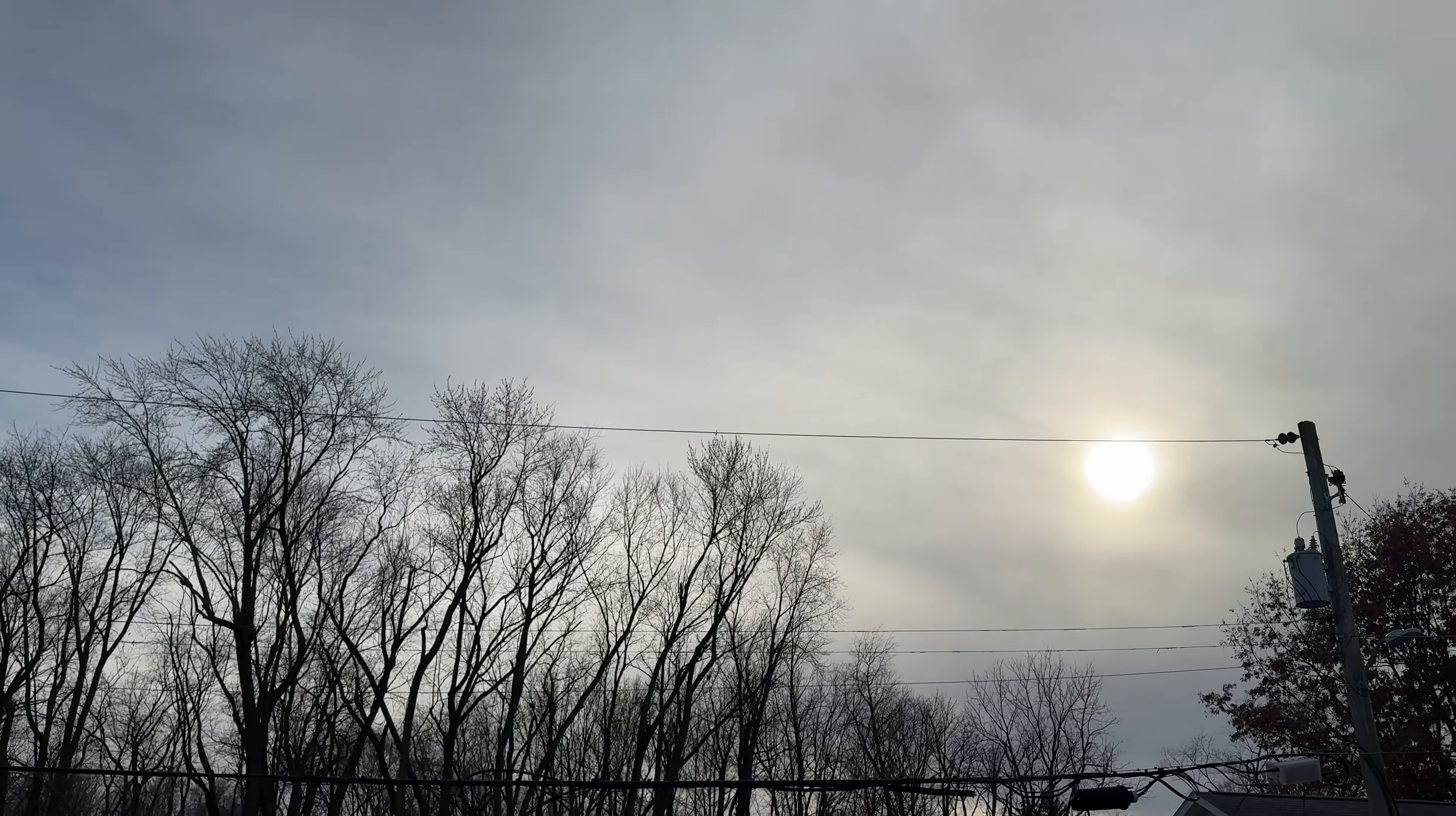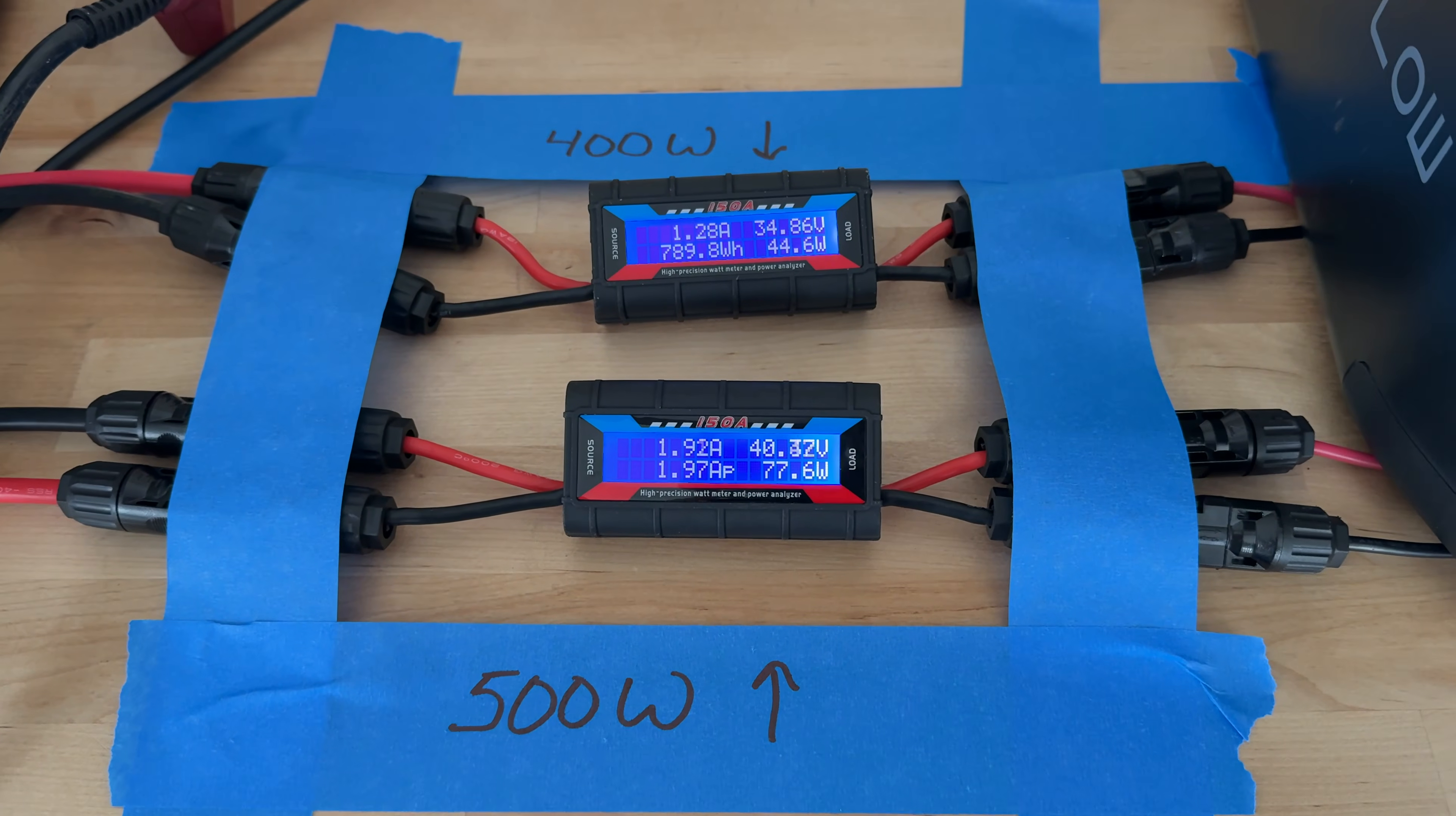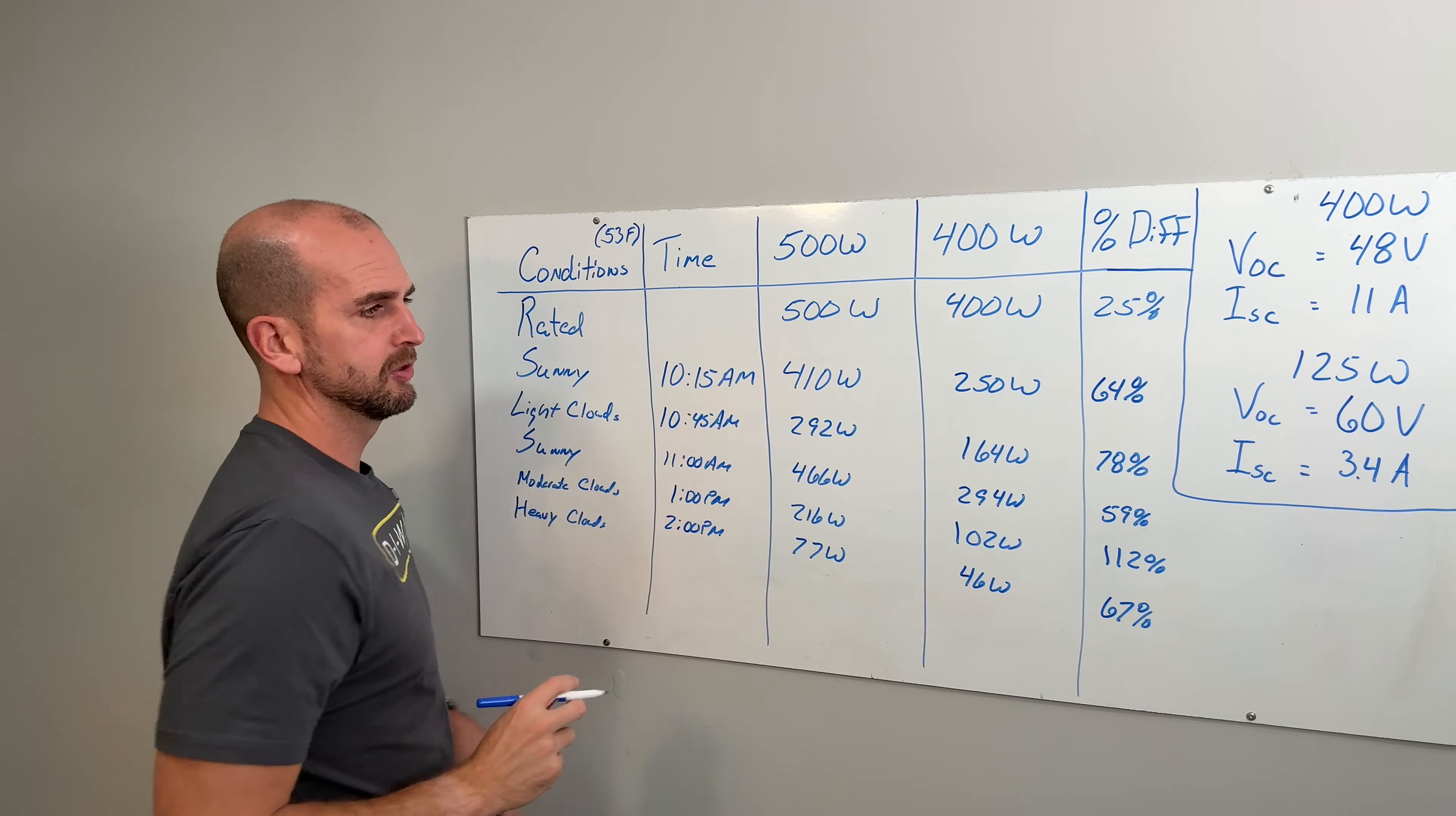The last one is a heavier cloud scenario, and this is getting a little bit later in the day for at least our winter months. This was at 2 PM. What we saw out of the 500 watt panels was all the way down to 77 watts and then the 400 watt was only putting out 46 watts, again resulting in 67 percent more power coming from the modular design.